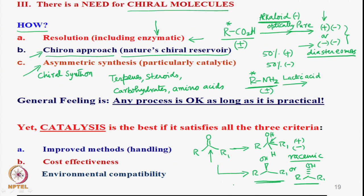There are several ways to do this. The problem is that if it is not a catalytic version, it turns out to be very expensive. Catalysis is the best way of carrying out this kind of conversion where a prochiral compound is converted to optically pure form. One has to aim at meeting the requirements of improved methods, cost effectiveness, environmental compatibility, and energy considerations.